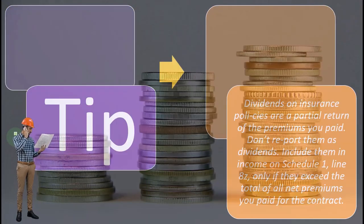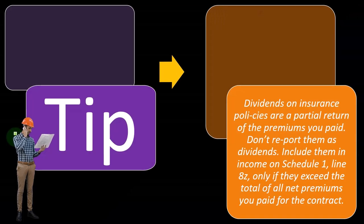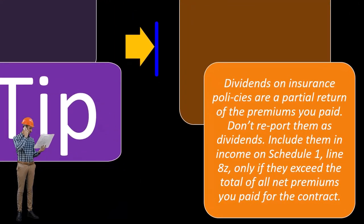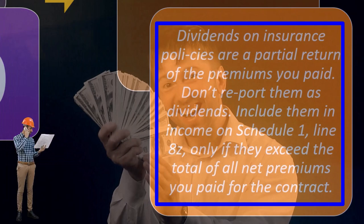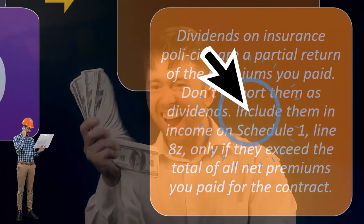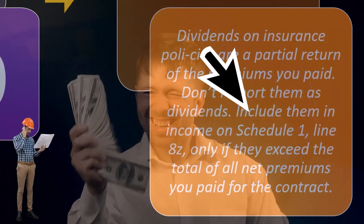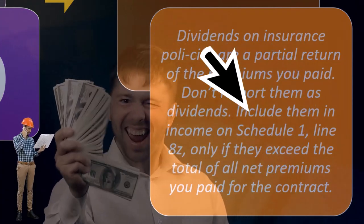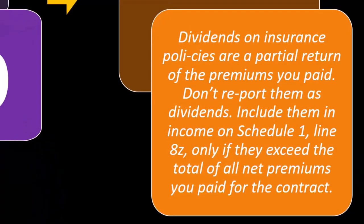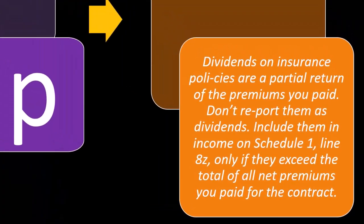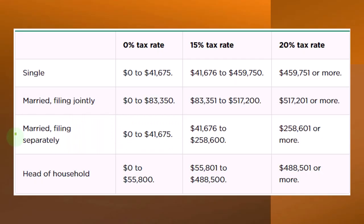Tip: dividends on insurance policies are a partial return of the premiums you paid. Don't report them as dividends. Include them in income on Schedule 1, line 8z, only if they exceed the total of all net premiums you paid for the contract.